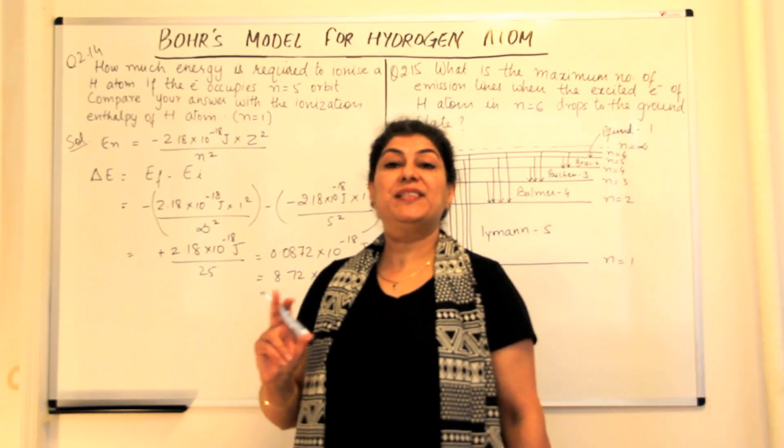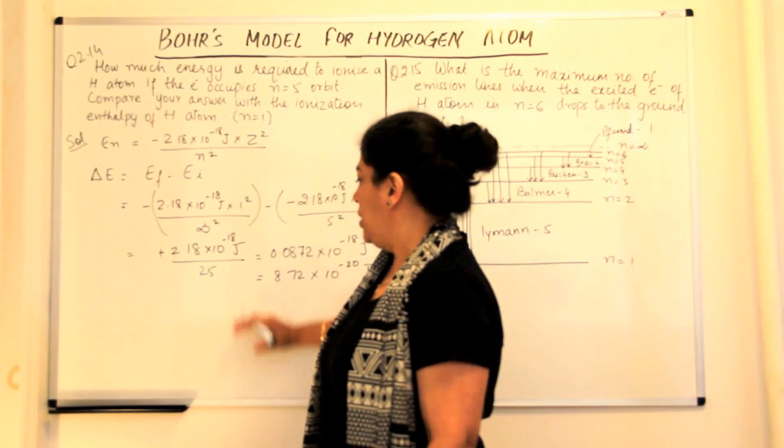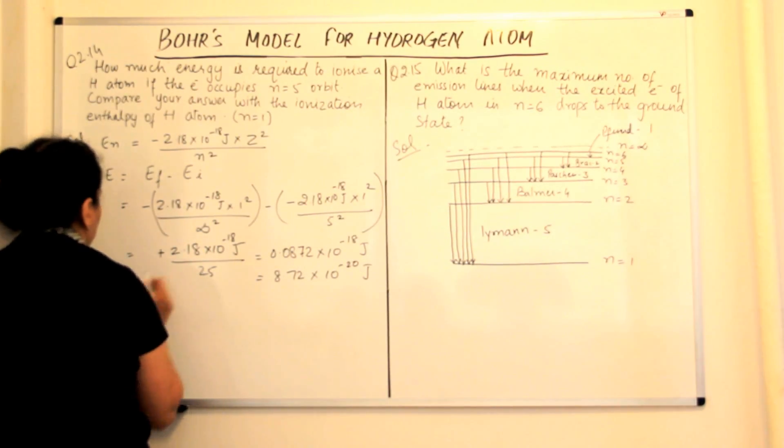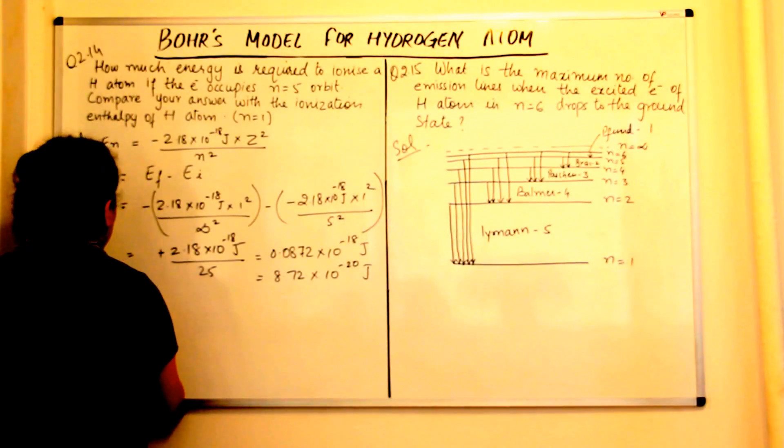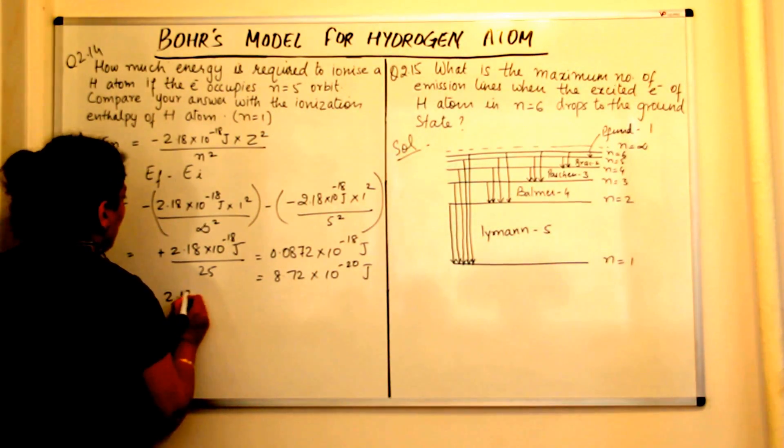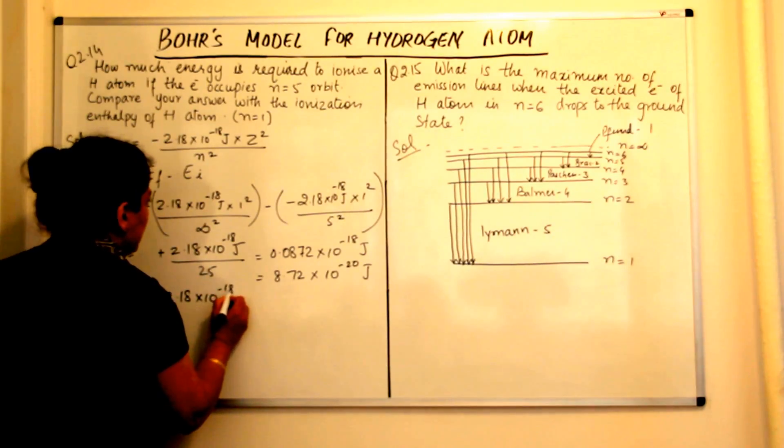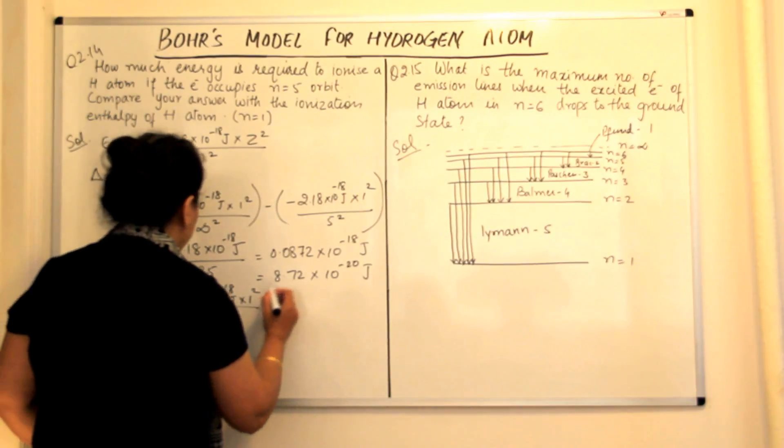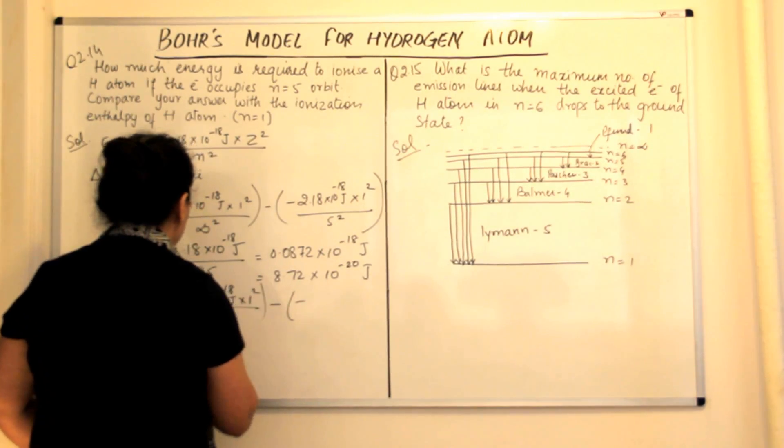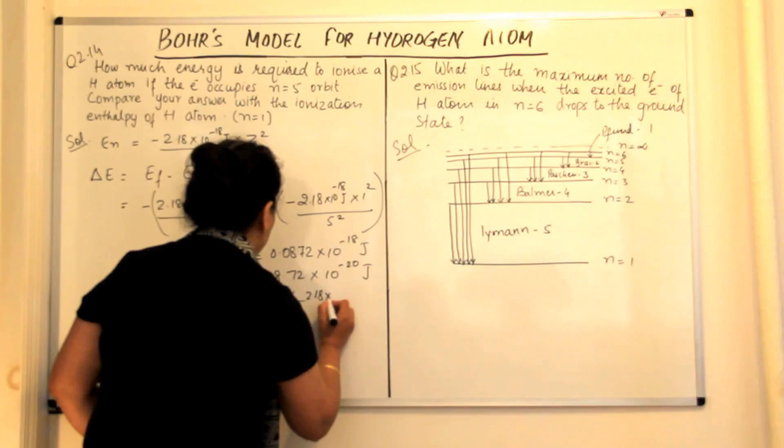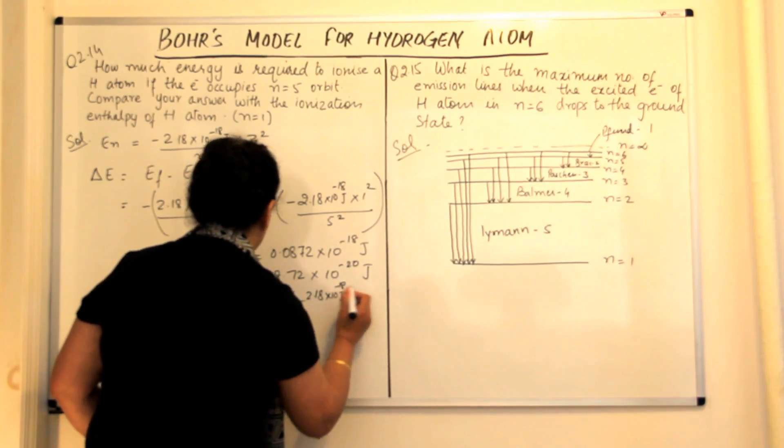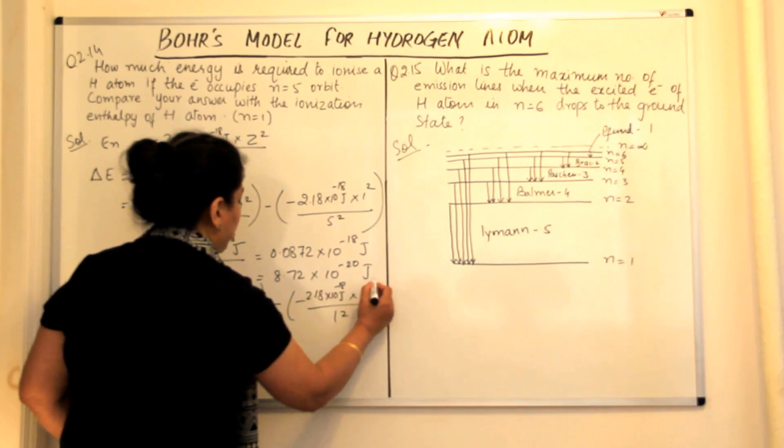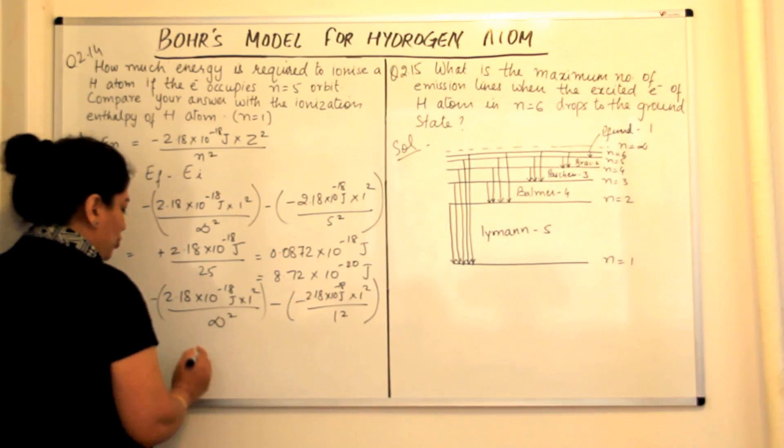If the electron is present in the first orbit, that is the ground state, what would be the energy? You use the same formula. Delta E is equal to minus 2.18 into 10 to the power minus 18 joules into 1 square upon infinity square minus minus of 2.18 into 10 to the power minus 18 joules into 1 square upon 1 square. This again becomes 0.